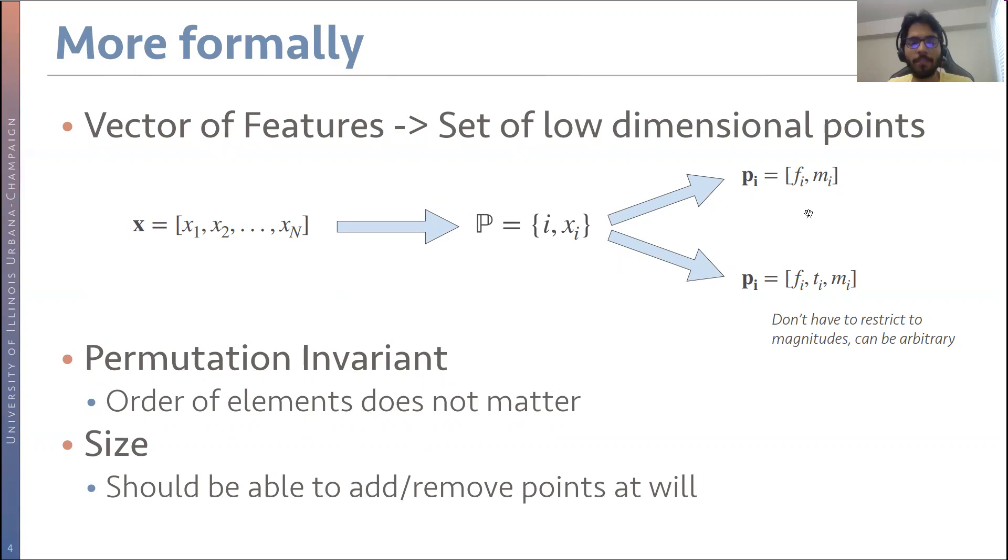An important thing to note when working with such sets is that permuting the elements of the set should not affect our output of the model. So they should be permutation invariant. And at the same time, we should have the freedom to add and remove elements from the set, and our model should not be affected by such things.